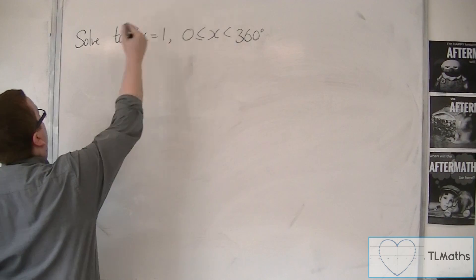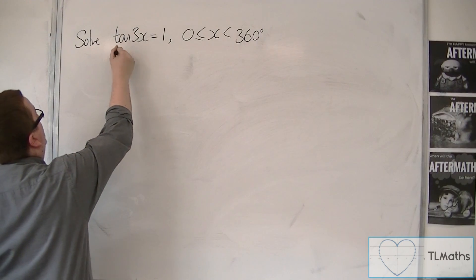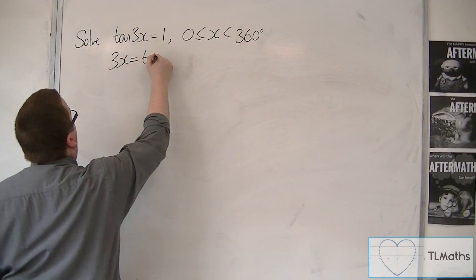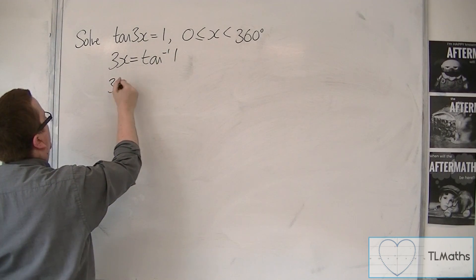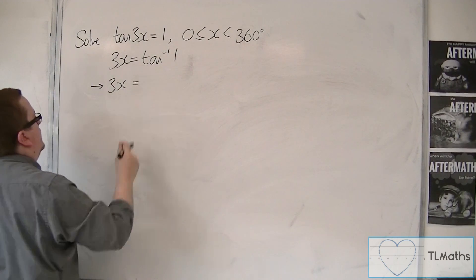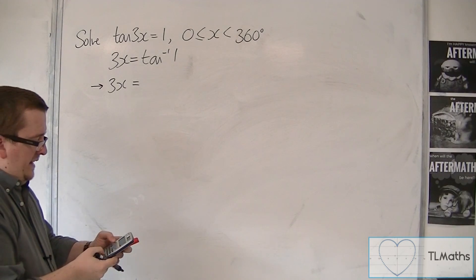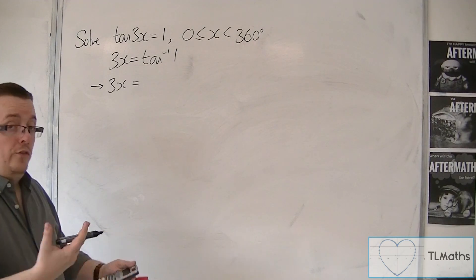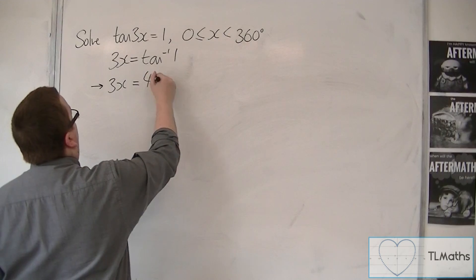So we are going to inverse tan both sides, inverse tan of 1. So we're going to have 3x equals inverse tan of 1, which is 45, so 45 degrees.